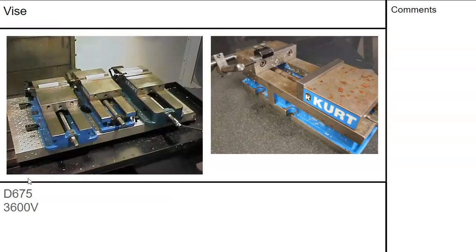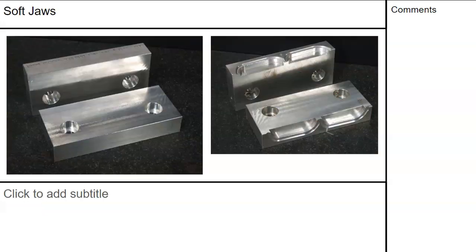Multiple vices on a subplate, and some different work stops — one that clamps to the jaws and one that hangs off the side giving a little more room. The main thing with the work stop is that it provides repeatability from part to part. Once we set our coordinate system on one of these parts, it will pretty much be the same within thousandths, if not tenths of a thousandth, from part to part.